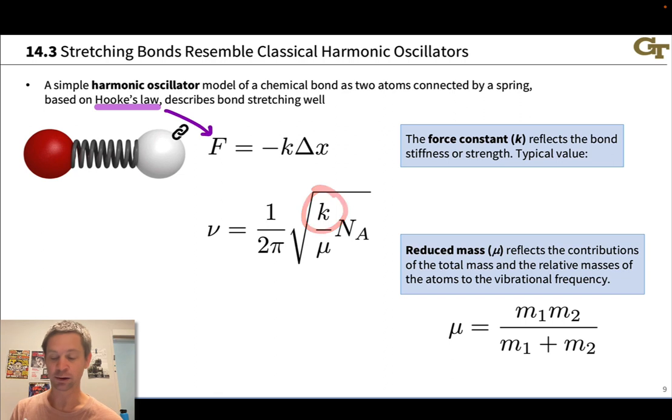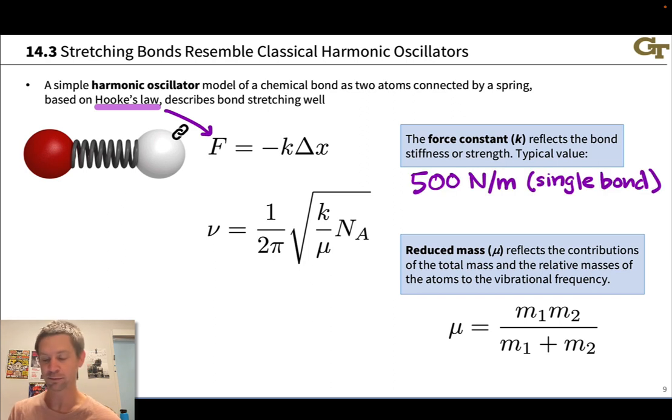This k value is the force constant. It's basically how much force we need to cause a particular displacement, delta x. For a molecular scale bond, a typical value for this is something like 500 newtons per meter for a single bond with roughly a little bit less than a doubling for a double bond and a little bit less than a tripling for a triple bond.